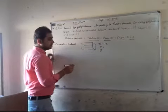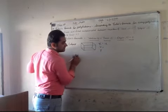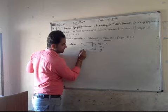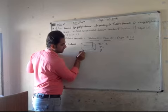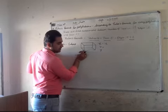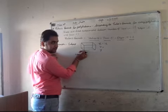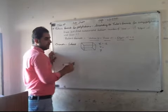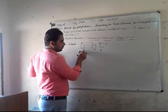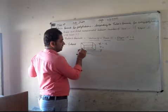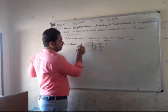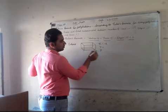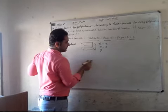Now vertex. Each corner where three edges meet counts as one vertex. Let's count: one, two, three, four, five, six, seven, eight. The total number of vertices is eight.